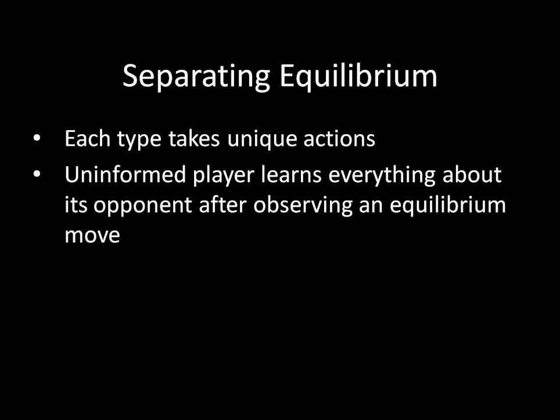In this case, it's going to be one type choosing one strategy, and another type choosing another strategy. And what's special about separating equilibrium is that uninformed players learn everything about their opponents after observing an equilibrium move. If one move has been made, it can only be made by a single player.